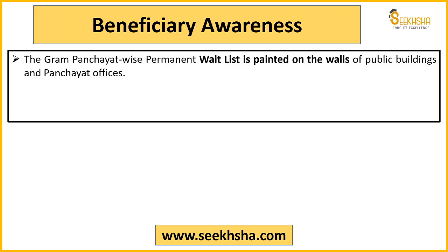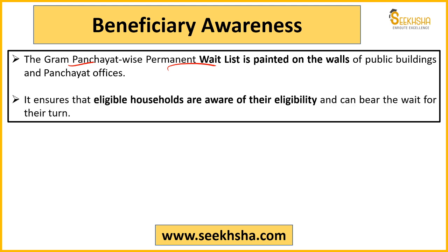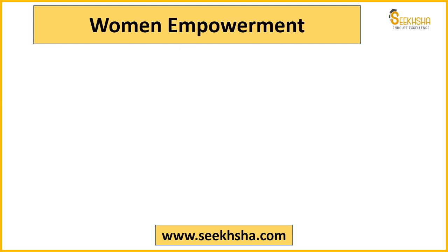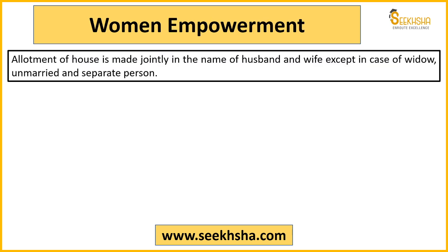For beneficiary awareness, the government has said that Gram Panchayats will create a permanent waiting list and paste it on village walls and public buildings, so that people know their name is on the waiting list. When previous houses are completed, their number will come up, so awareness will be generated and eligible households will know that they are eligible.